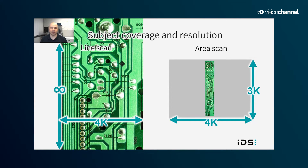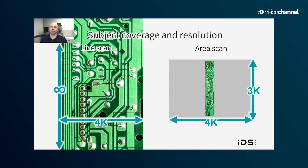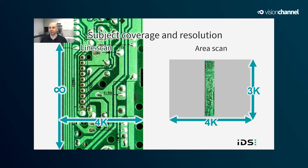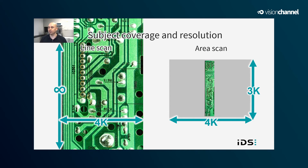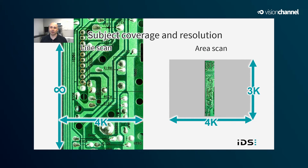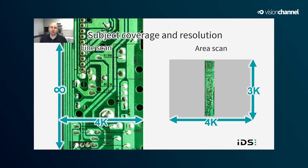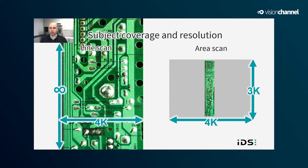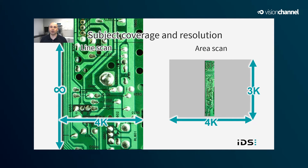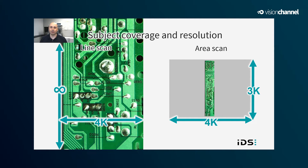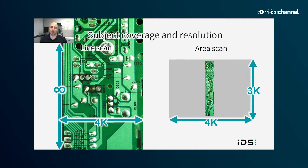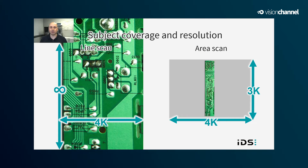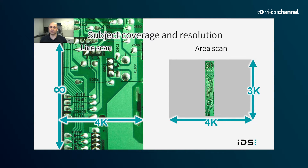Area scan sensors are limited to the resolution given by the number of pixels on the sensor — width by height — like this 12 megapixel image sensor. Line scan imaging can create image data with infinite resolution in the scanning dimension, so generally line scan imaging creates higher resolution image data. You can try to match the resolution of a line scan image sensor by capturing a bunch of area scan images, but this has the added complexity of having to stitch those images together.